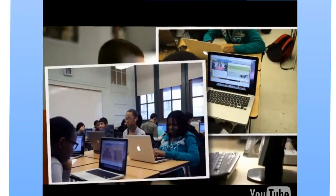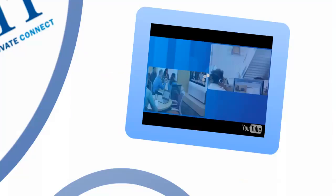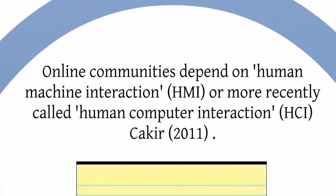Online communities depend on human-machine interaction, more recently called human-computer interaction. Kakir reviews the book The Handbook of Human-Machine Interaction: A Human-Centered Design Approach. Previously, humans designed computer systems to be automated so that the machine had the leading part and the human was the operator. You, for example, are the operator as you watch this clip. You can pause or play at will, so it appears that you have the power to drive the technology.